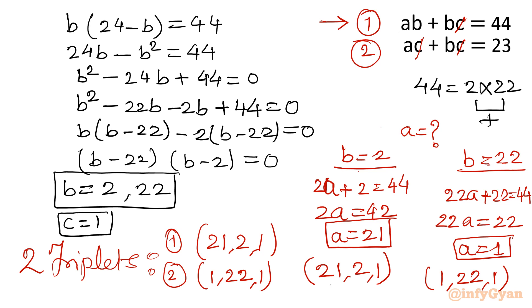21, 2, 1. So let me write 21, 2, 1. This is a, b, c. Check. Ab plus bc equal to 44. Ab means the product of 21 and 2. Bc: 2 and 1 equal to 44. So 42 plus 2 equal to 44. 44 is equal to 44. True.